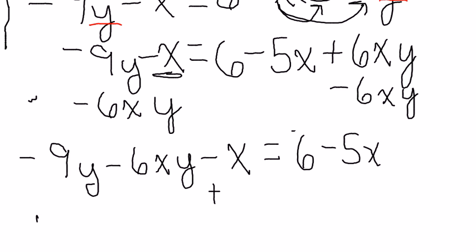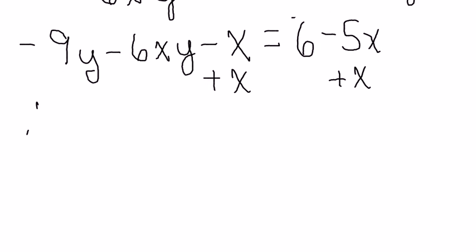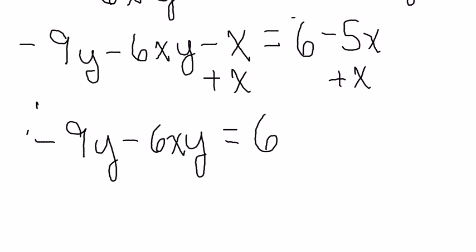Now, let's add x to both sides. And you'll see why we're doing that in a second. So, over here, I've got negative 9y minus 6xy left. Over here, I've got 6, and then I've got negative 5x plus an x. So, minus 4x.